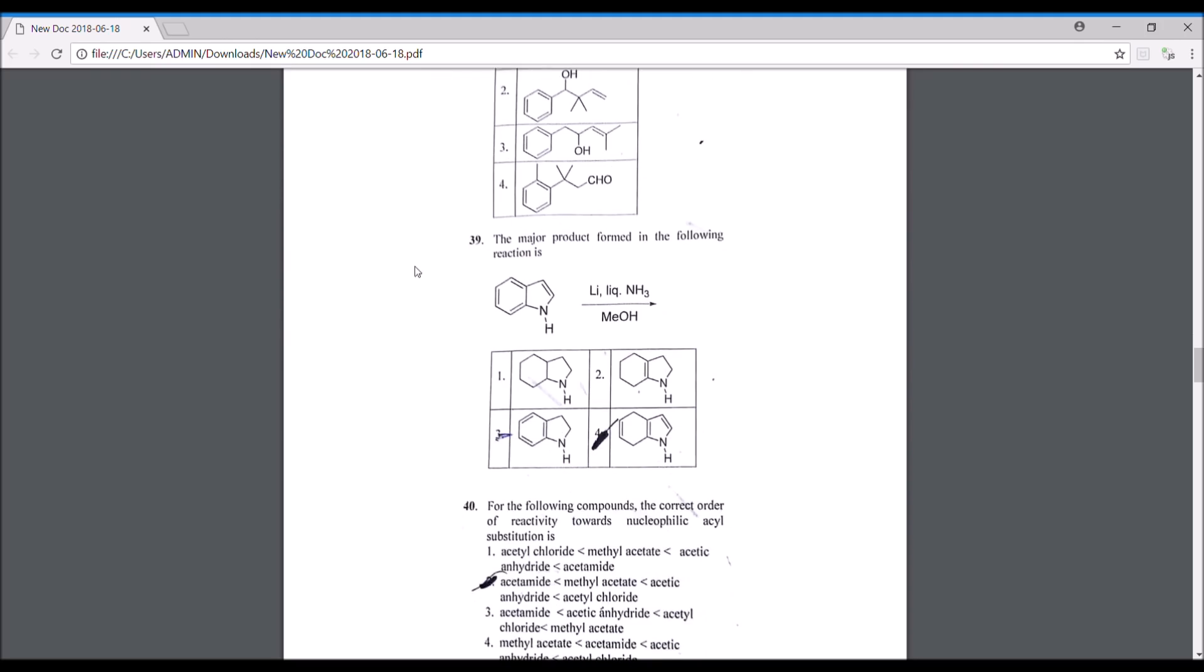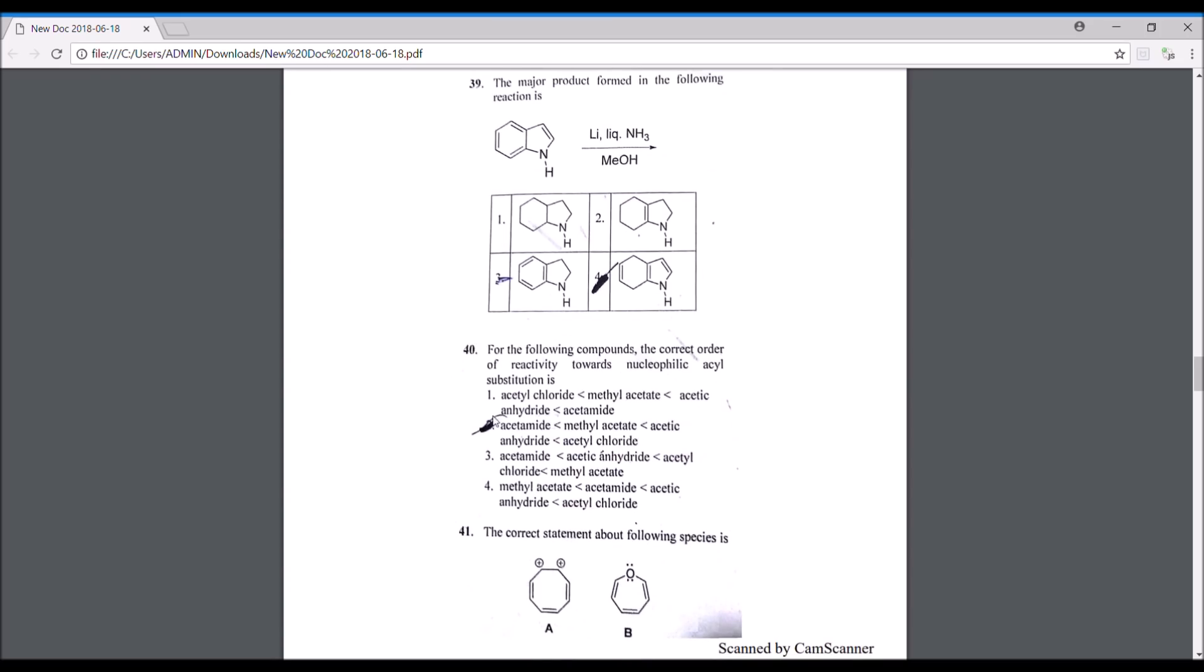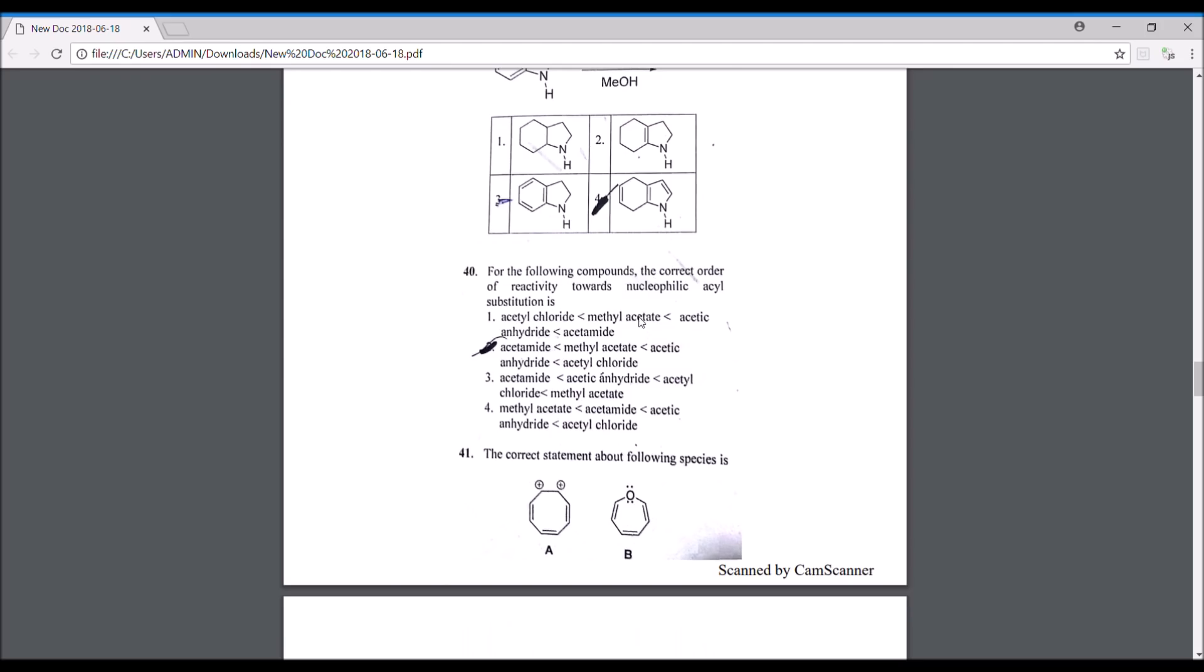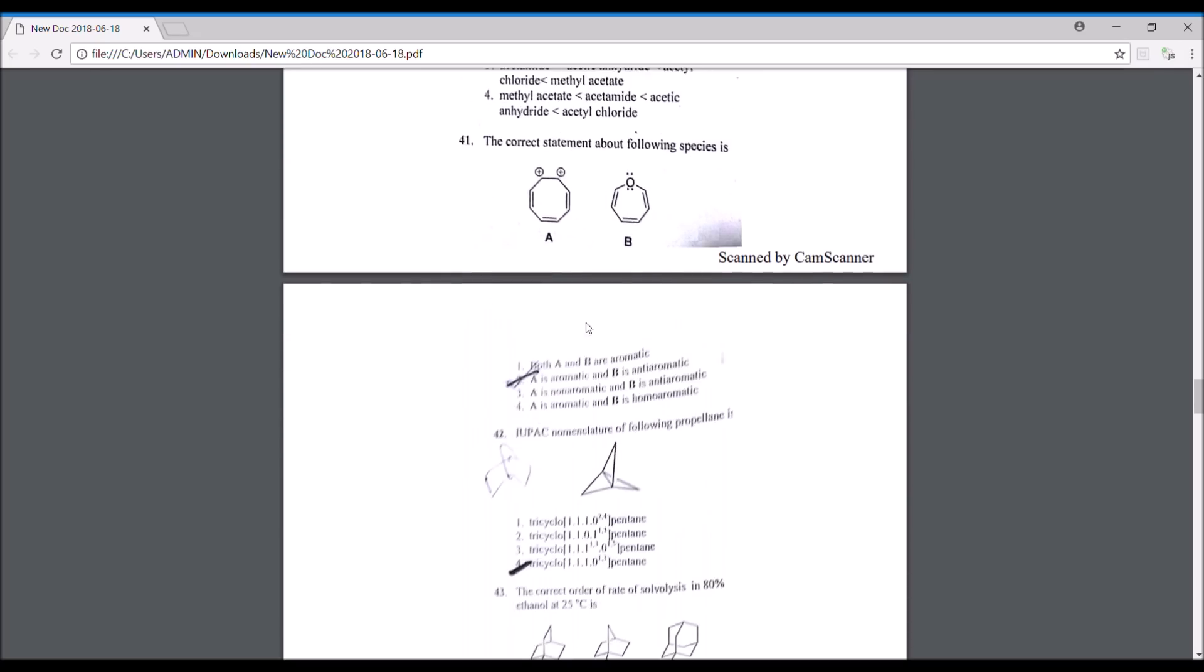This is simple Birch reduction. We have an indole, and if we do a Birch reduction of indole, the more deficient nucleus gets reduced. The more deficient ring is the phenyl ring, and this is an electron-rich ring because of the lone pair of nitrogen. So the correct answer is option number four. For the 40th question, correct answer is option number two. A nucleophilic reaction is taking place, so acetyl chloride is highly susceptible to nucleophilic reactions, so this will undergo nucleophilic substitution the fastest. For question 41, A is aromatic and B is anti-aromatic, since oxygen's lone pair also participates in resonance, so it becomes a 4n pi system. So A is aromatic and B is anti-aromatic, that is option number two.